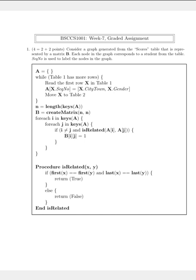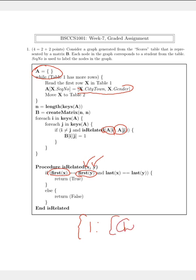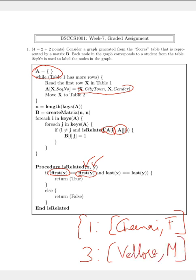X and Y here are lists. The first element of X should be equal to the first element of Y. What we've taken A[i] to be is the city or town and the gender of the student. So it should be equal to the city or town and gender of student J. Essentially, we check if these two elements are equal. If they are not equal we go back to the for-each loop. If they are equal, we enter the if-statement and update the value of B[i][j] to 1.